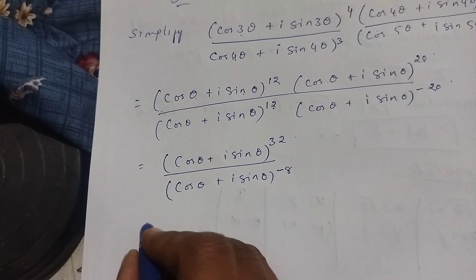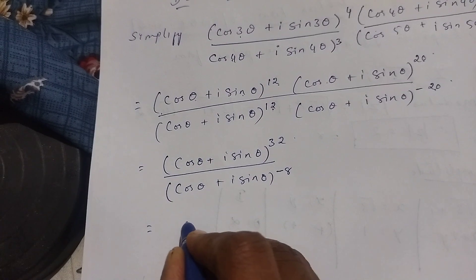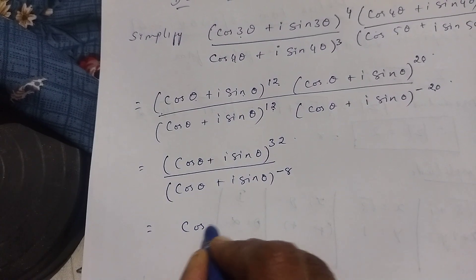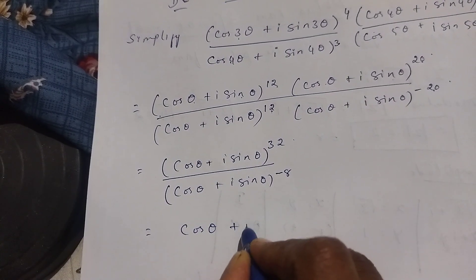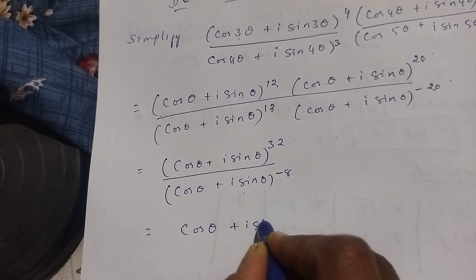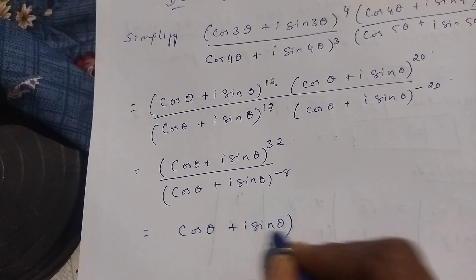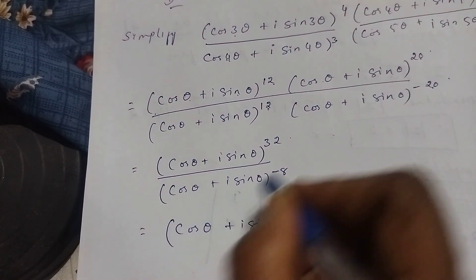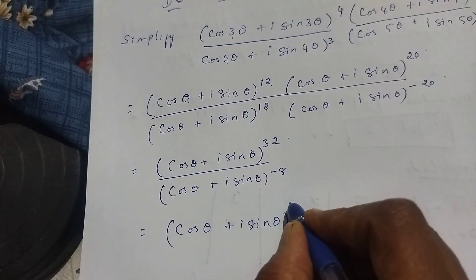You just write cos θ + i sin θ one time, then write the power 32 in the numerator.